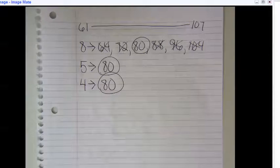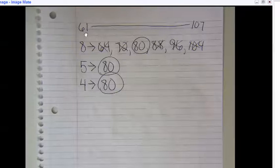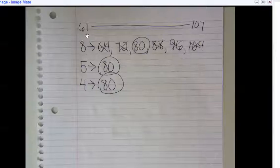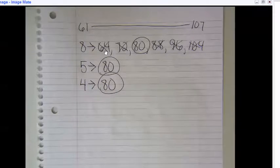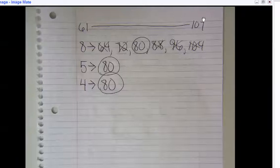Here are my notes. She must choose a number that is a multiple of eight, five, and four that falls between 61 and 107. So multiples of eight that fall between 61 and 107: eight times eight is 64, times nine is 72, times 10 is 80, times 11 is 88, times 12 is 96, times 13 is 104. Times 14 would go over 107, so I stopped there at 104.